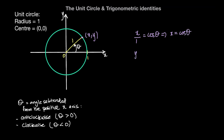Similarly, the ratio between the y coordinate and the radius can be expressed as sine of theta. And since the radius is again just 1, we can say that the y coordinate of any point on the unit circle in terms of theta can be expressed as sine of theta.